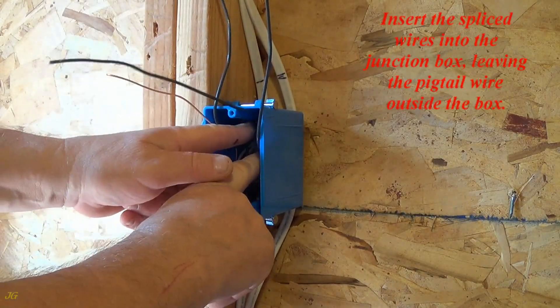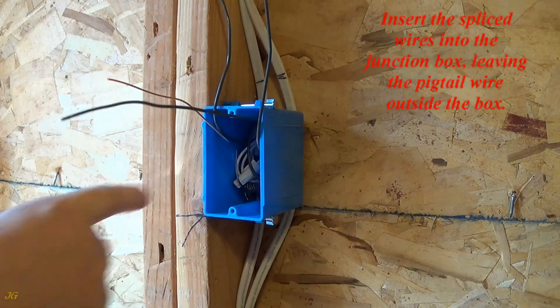Insert the spliced wires into the junction box, leaving the pigtail wire outside the box.